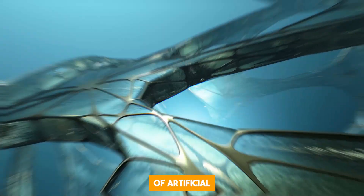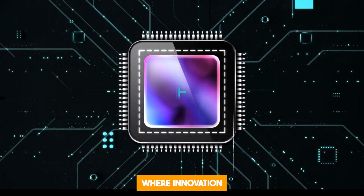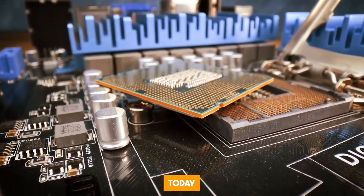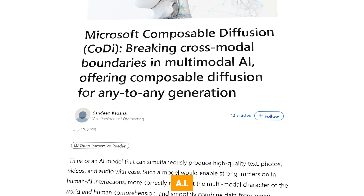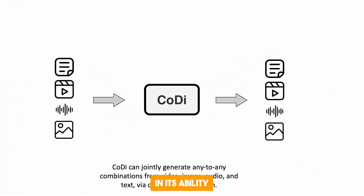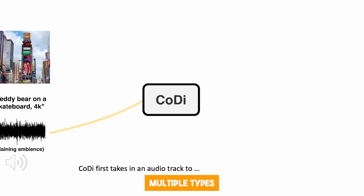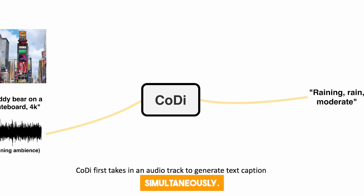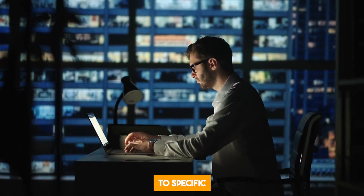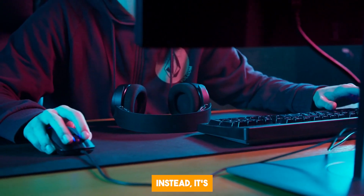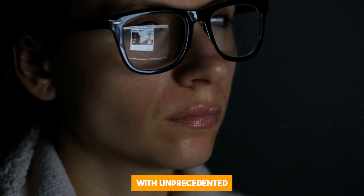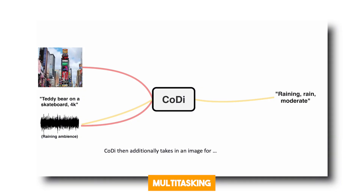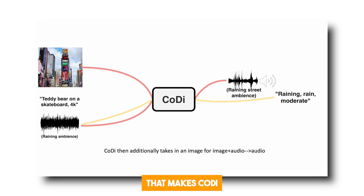Welcome to the exciting world of artificial intelligence, where innovation is the name of the game. Today, we introduce Composable Diffusion, or CODI, a groundbreaking AI model that stands apart in its ability to process and generate multiple types of media simultaneously. CODI isn't tied down to specific media types like many conventional models. Instead, it's versatile and adaptable, handling diverse data with unprecedented efficiency — a true trailblazer in digital content generation.